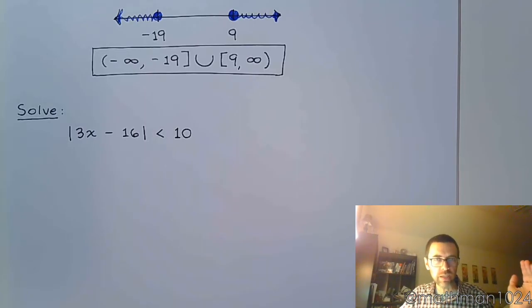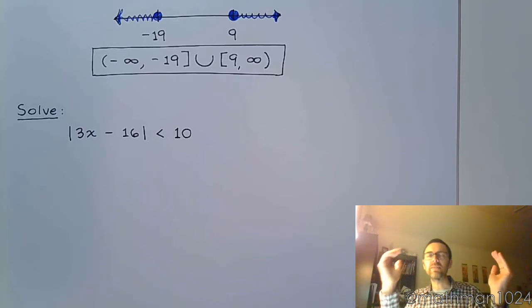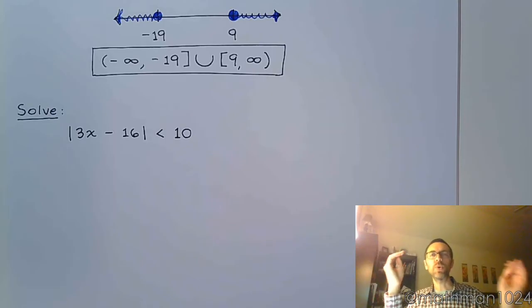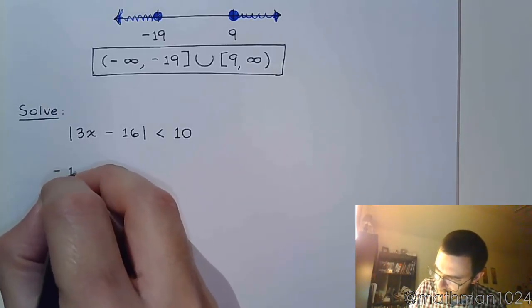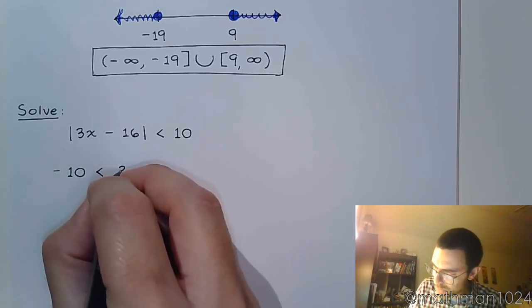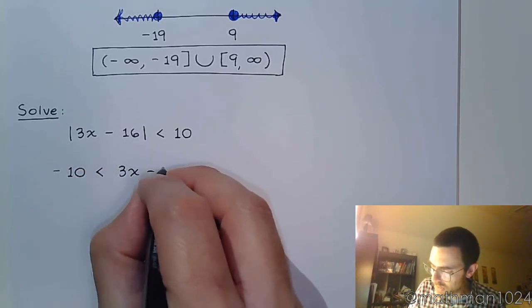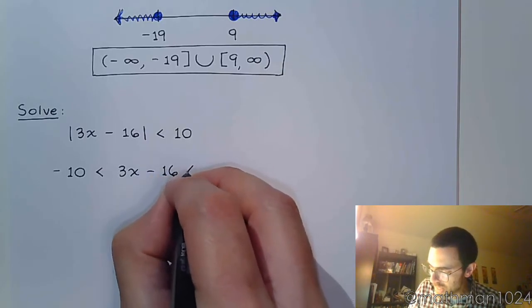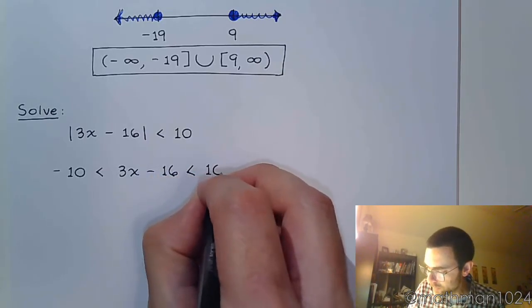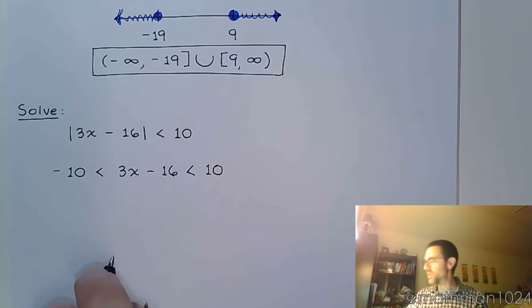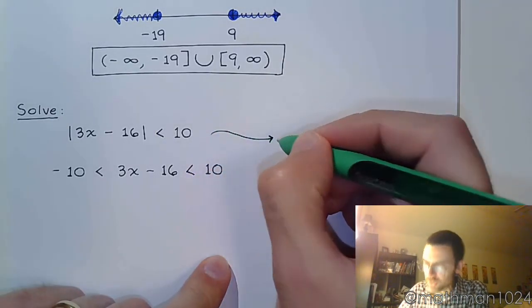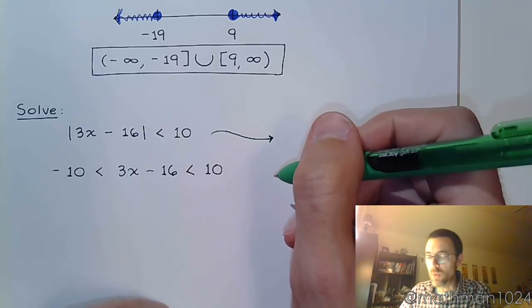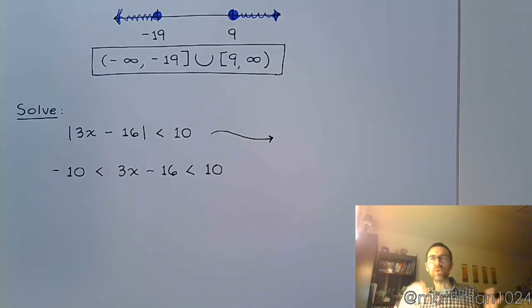That means you can go as far out as positive 10 on the right or negative 10 on the left. So those become your initial boundaries. That means this expression is bounded between negative 10 and positive 10.